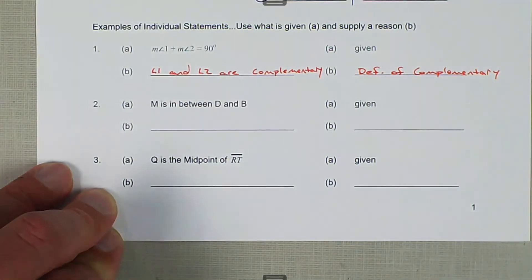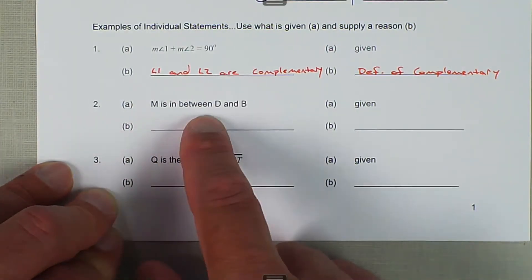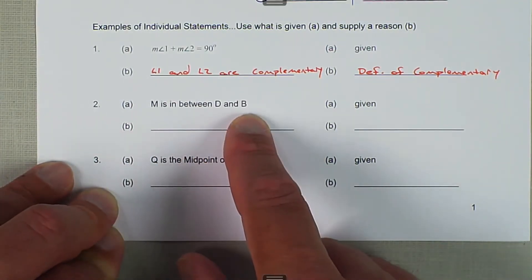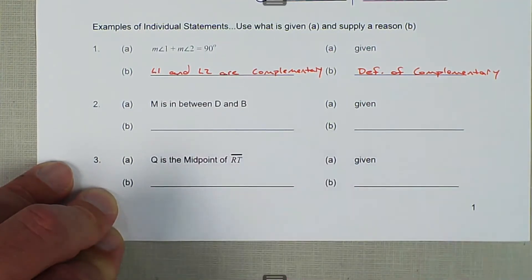Next, M is between D and B. In that case, we're thinking of adding these together. So if we had a quick sketch of this example...